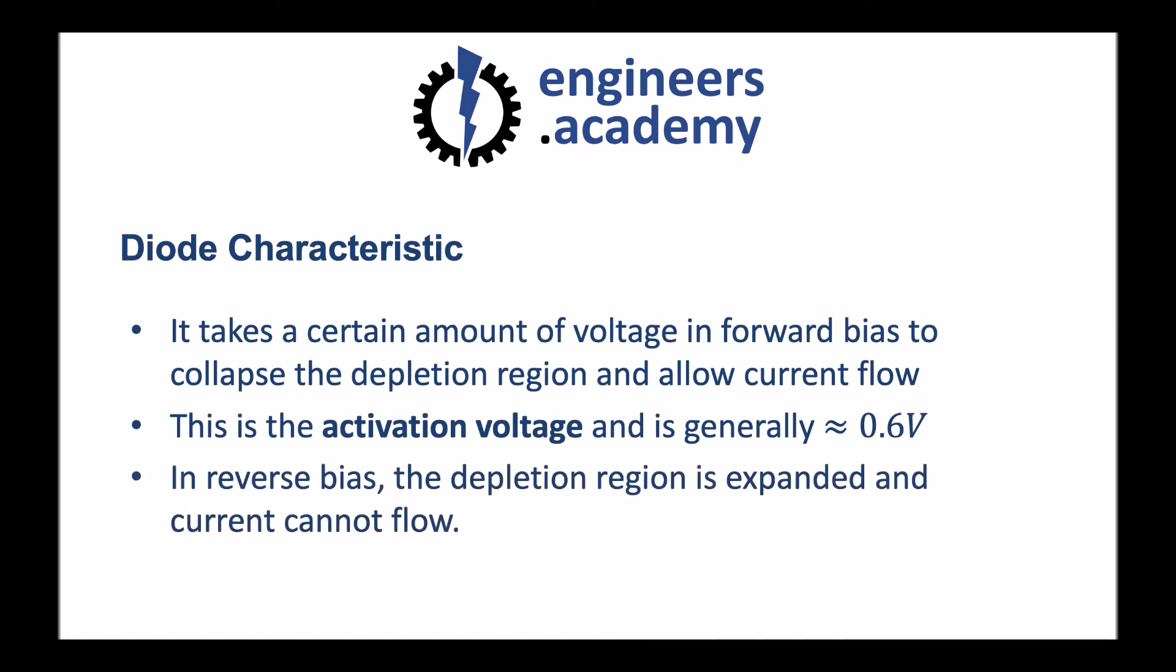In reverse bias, on the other hand, the depletion region is expanded and current cannot flow. This is why a diode in reverse bias doesn't conduct current, but a diode in forward bias does.